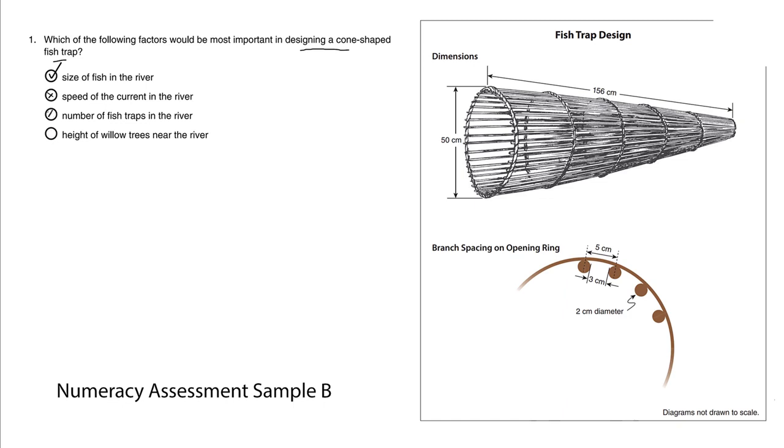Option D: the height of willow trees near the river. The height of the trees has nothing to do with the actual design of this trap.